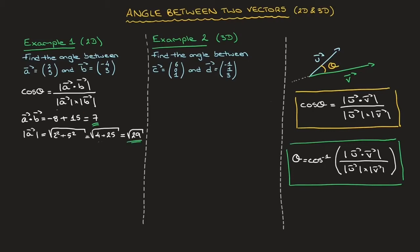Next, the magnitude of b. The magnitude of b is equal to the square root of negative 4 squared plus 3 squared, which is the square root of 16 plus 9. That's equal to the square root of 25, which equals 5.